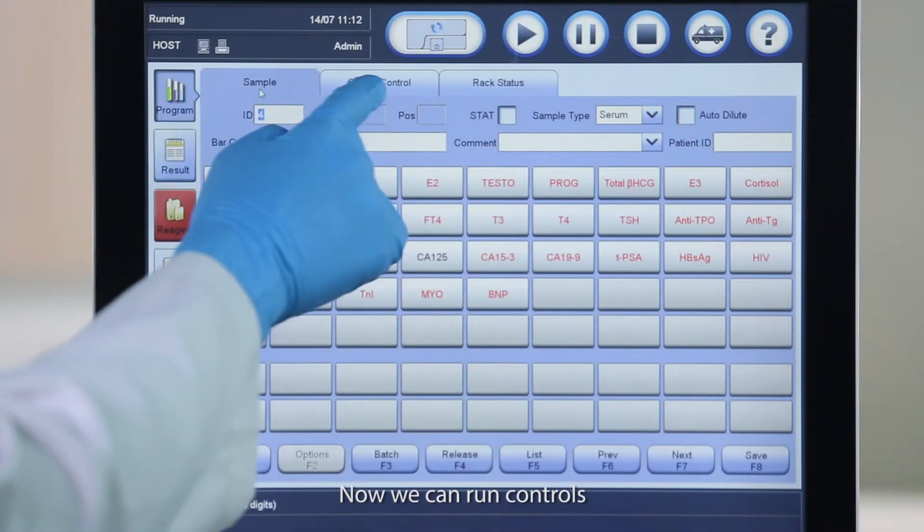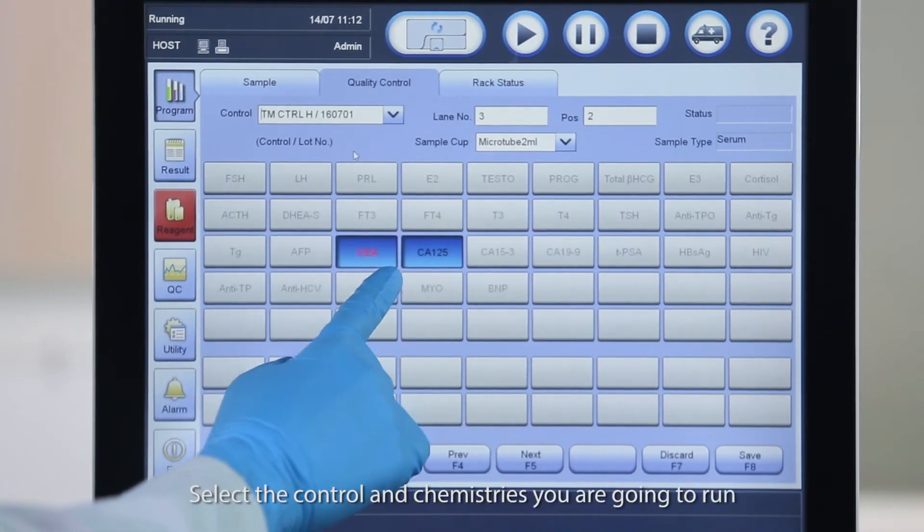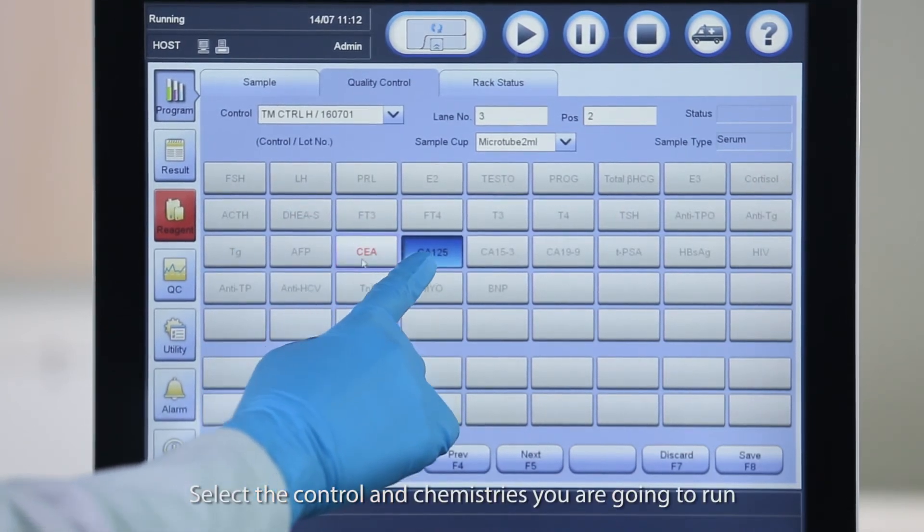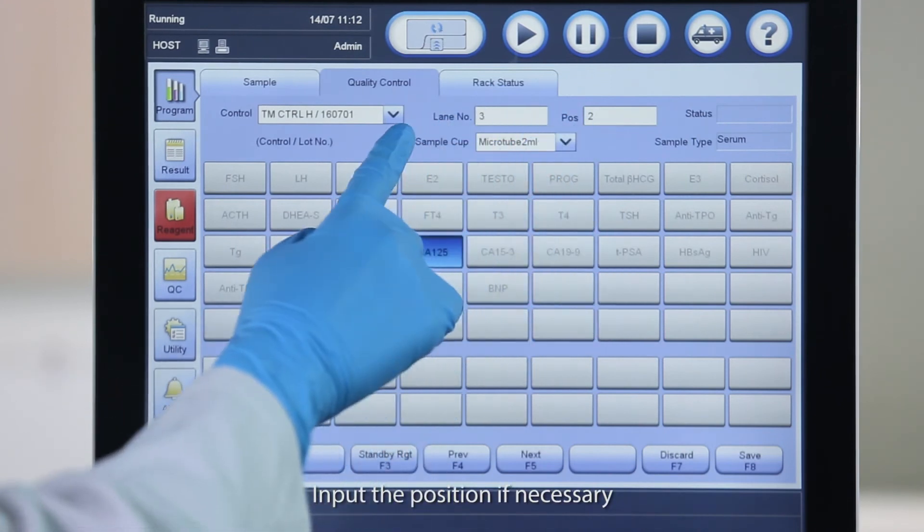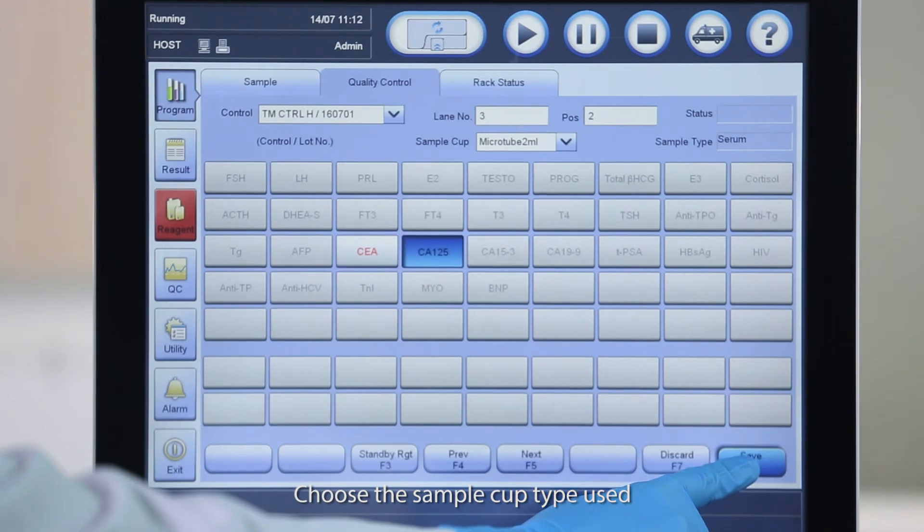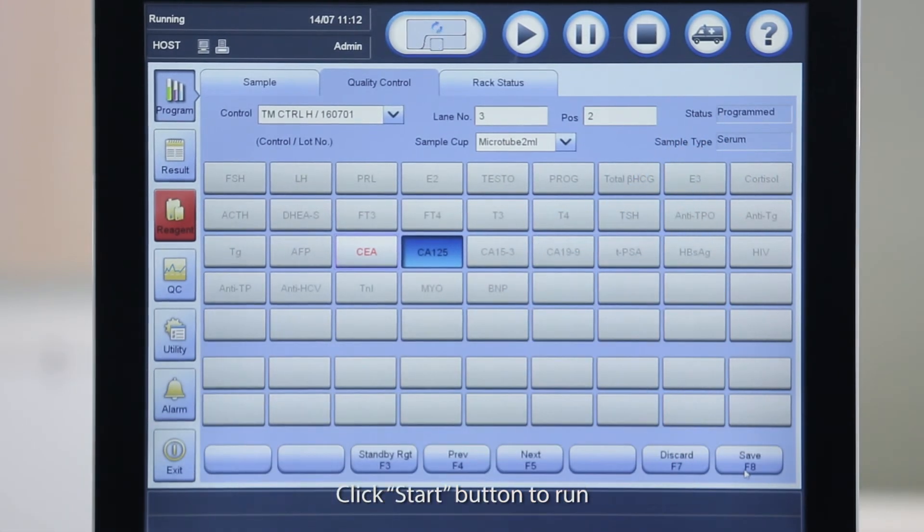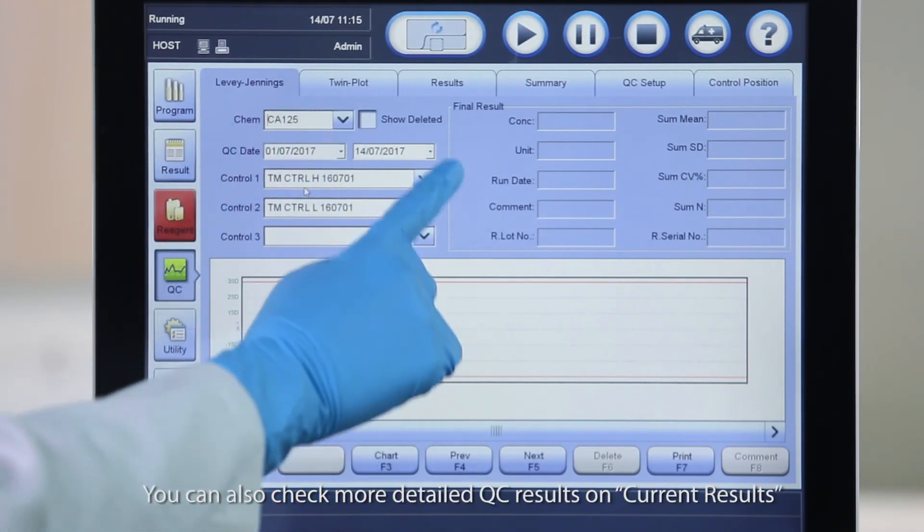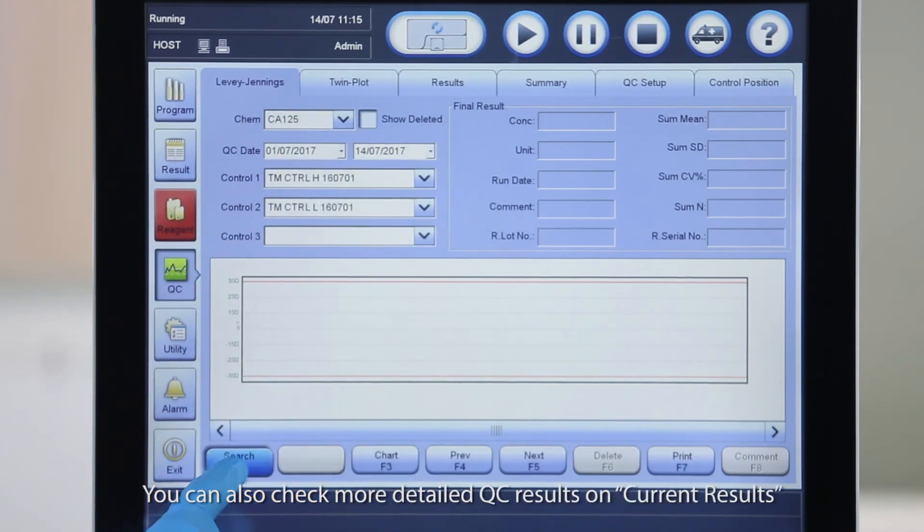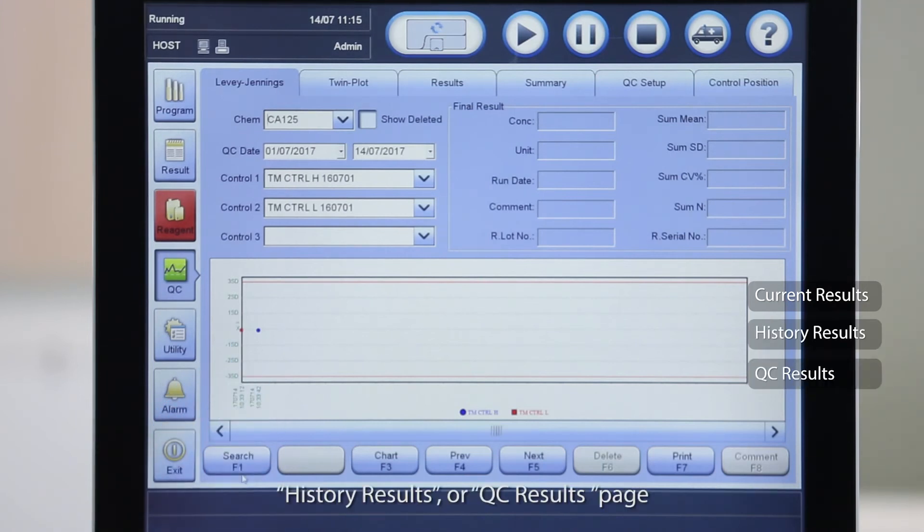Now we can run controls. Click Program and Quality Control. Select the control and chemistries you are going to run. Input the position if necessary. Choose the sample cup type used. Load control according to the position you set. Click Start button to run. When QC is finished, you can check the LJ chart. You can also check more detailed QC results on Current Results, History Results or QC Results page.